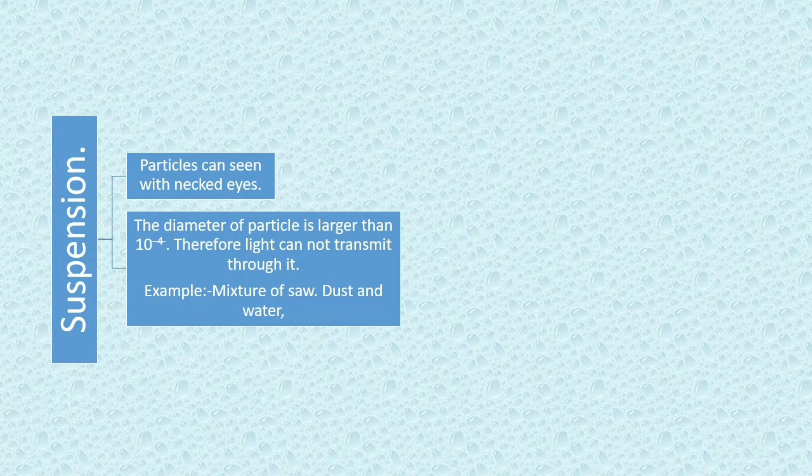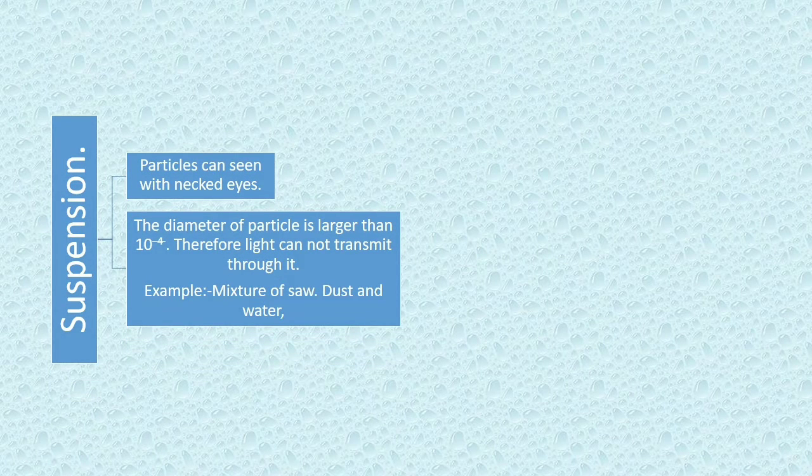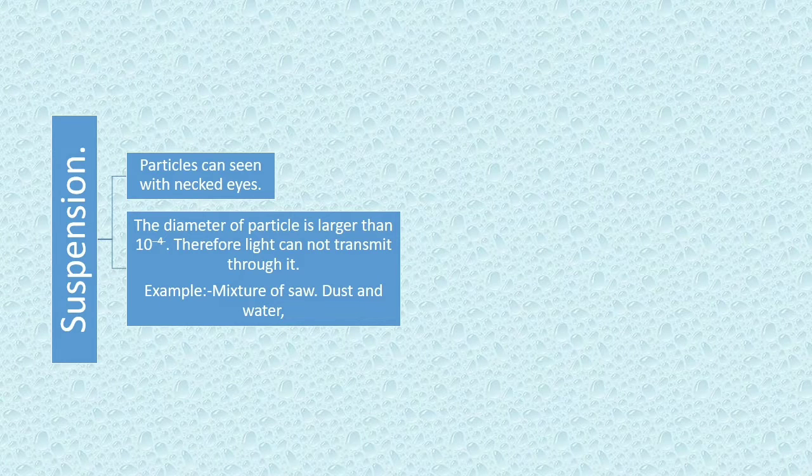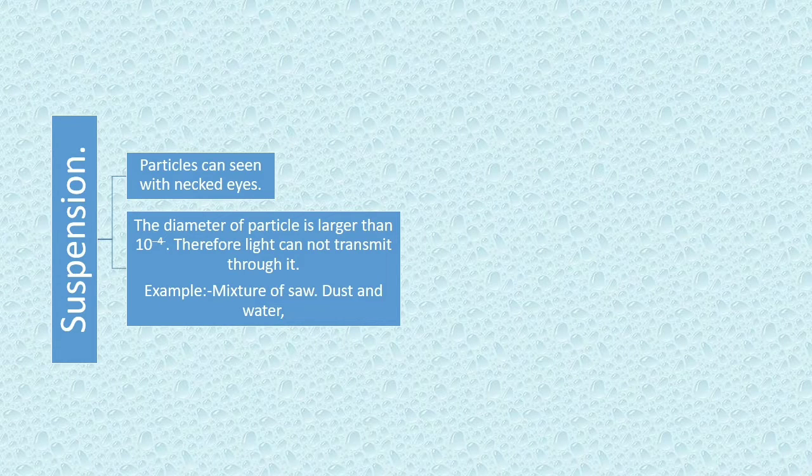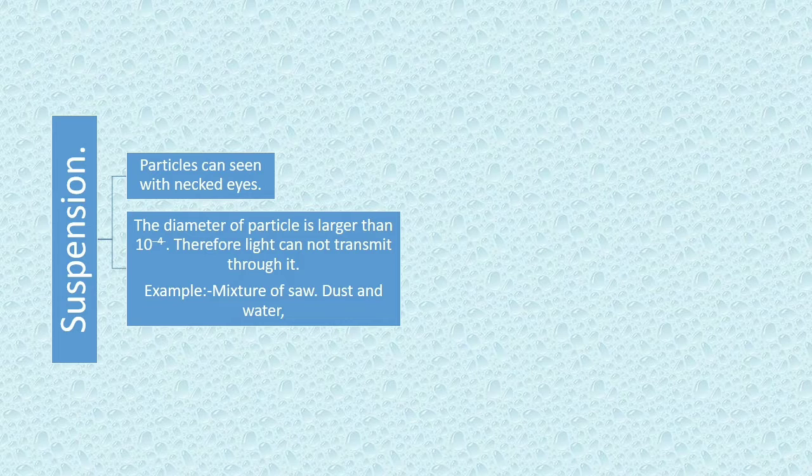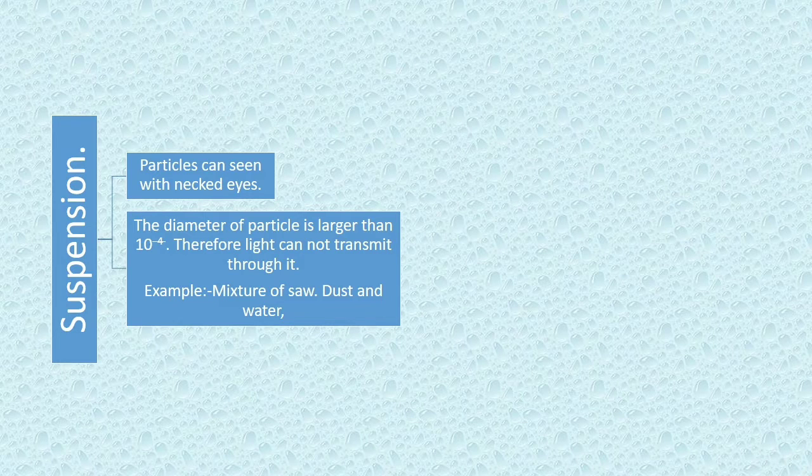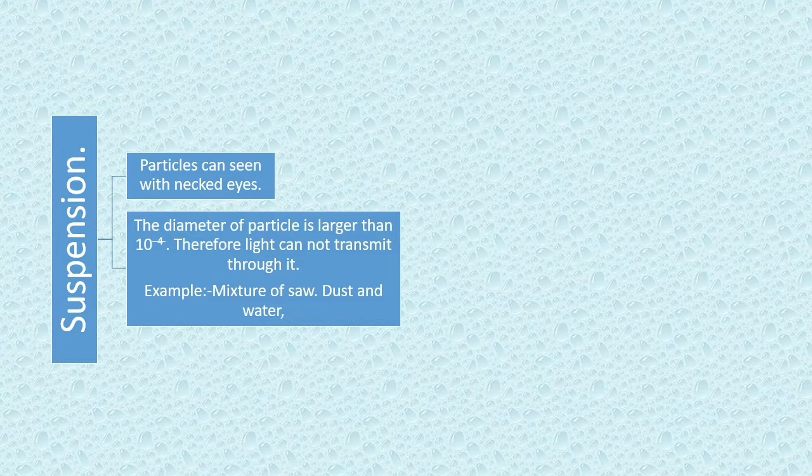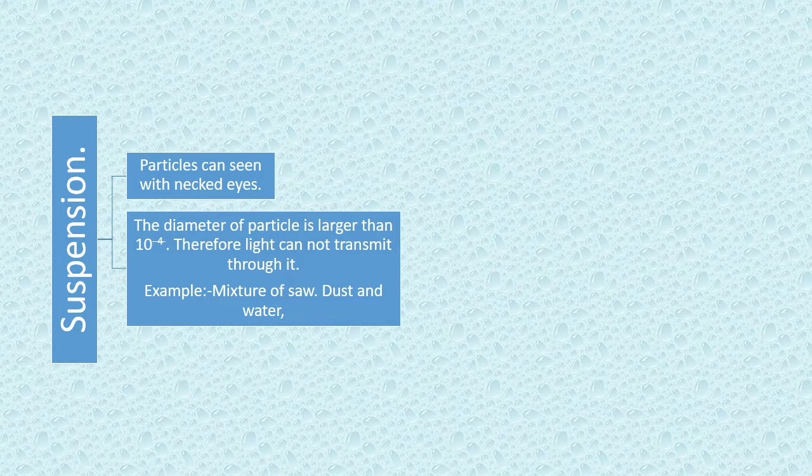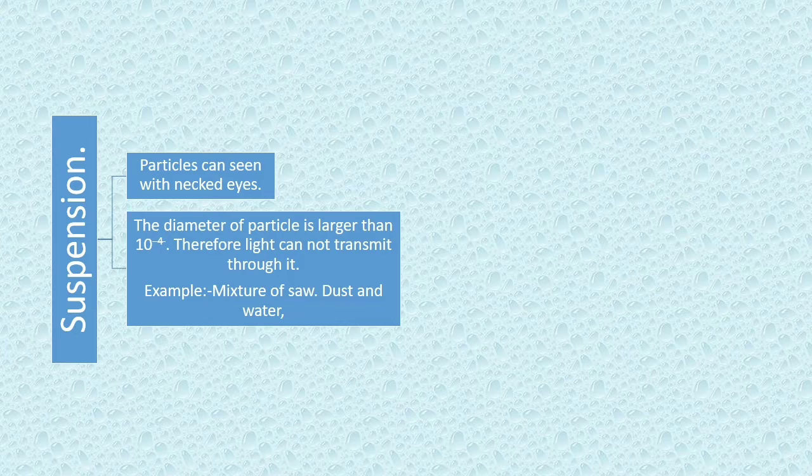Suspension is a mixture in which particles can be seen with naked eyes. The diameter of particle is larger than 10 raised to power minus 4 meter. Therefore, light cannot transmit through it. For example, mixture of salt, dust and water.